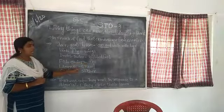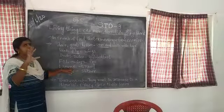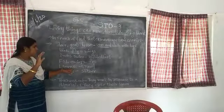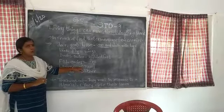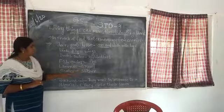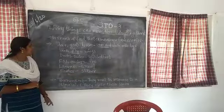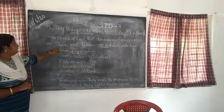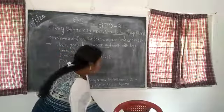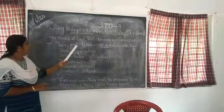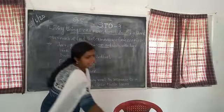Lizards, crow, snakes — they slither. Once again: deer, goat, horse run and move with their legs.